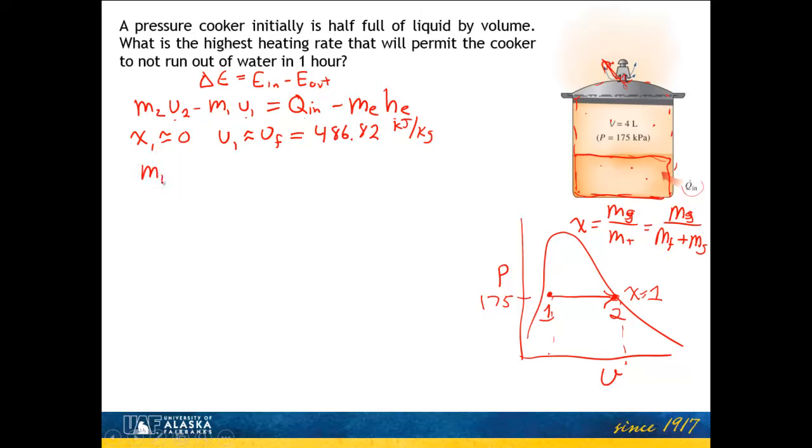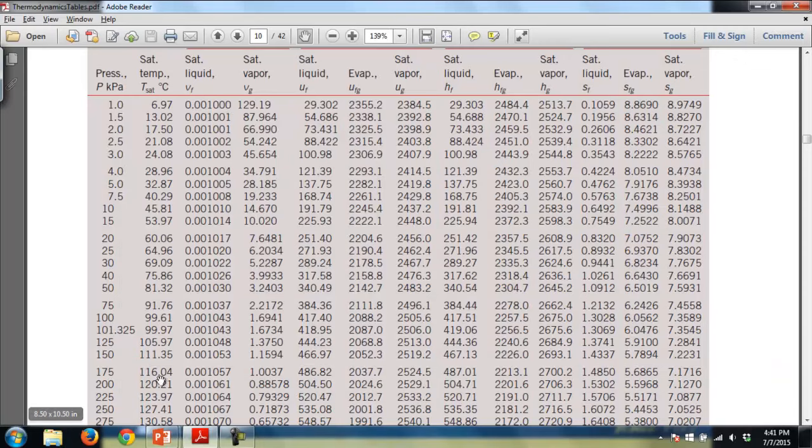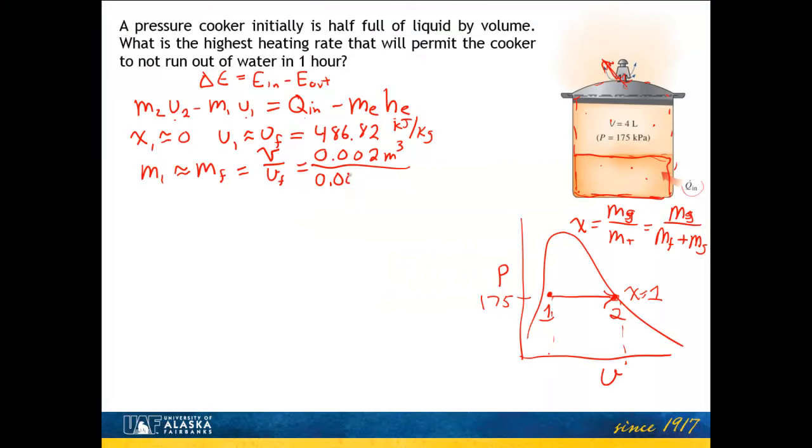We need to find the initial mass M1. The initial mass of the whole system is essentially just the mass of the liquid, M sub F. That's the total volume of liquid over V sub F, which is the inverse density. The volume is half of 4 liters or 2 liters, which is 0.002 cubic meters. V sub F from the tables at 175 is 0.001057 cubic meters per kilogram. So M1 is 1.892 kilograms.